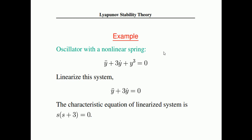Let us look at an example: y-double-dot plus 3·y-dot plus y³ equals 0. We will check its stability using both methods. In the first method, we linearize it: y-double-dot plus 3·y-dot equals 0, whose characteristic equation is s(s + 3) = 0, giving roots s = −3 and s = 0. The root −3 confirms some stability, but the zero root means we cannot confirm stability — so we need the Lyapunov second method.